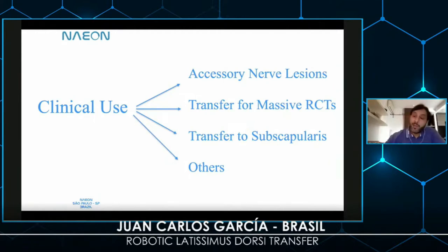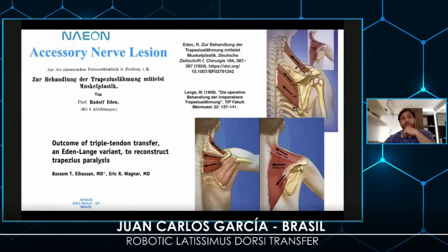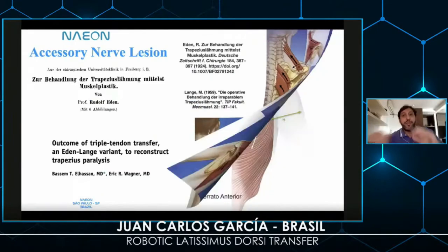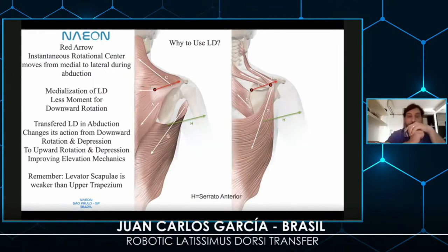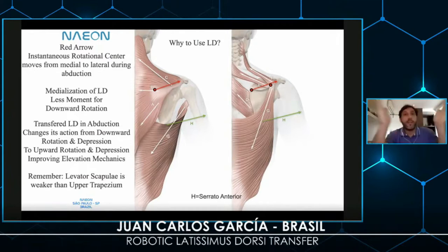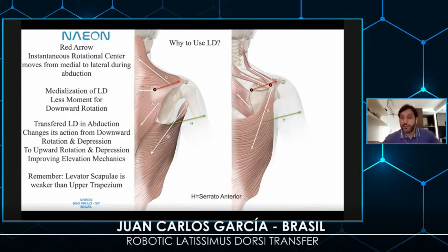I'm using this for accessory nerve lesions, for transfers from the subscapularis, rotator cuff transfers, and other scapular problems. The accessory nerve is routinely treated with two possible surgeries. We figured out why not use the latissimus dorsi, since the instantaneous rotational center moves from medial to lateral during abduction. Medialization of the latissimus dorsi can reduce the moment of downward rotation; transferring the latissimus dorsi in abduction changes its action from downward rotation and depression to upward rotation and depression, improving elevation mechanics. This happens because the levator scapula is weaker than the upper trapezius.